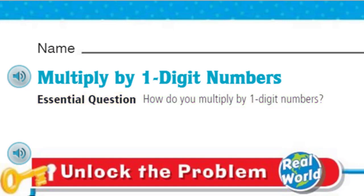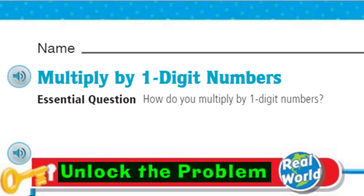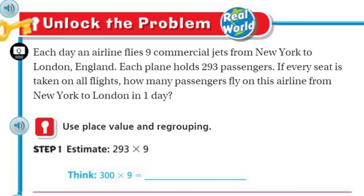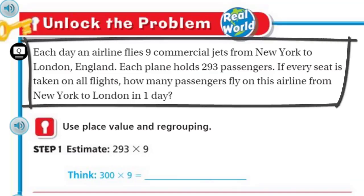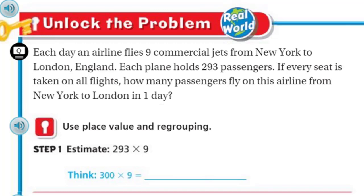But of course, we can't do any of that unless we unlock the problem. That's right, because it's real-world. It states, each day an airline flies 9 commercial jets from New York to London, England. Each plane holds 293 passengers. If every seat is taken on all flights, how many passengers fly on this airline from New York to London in one day?